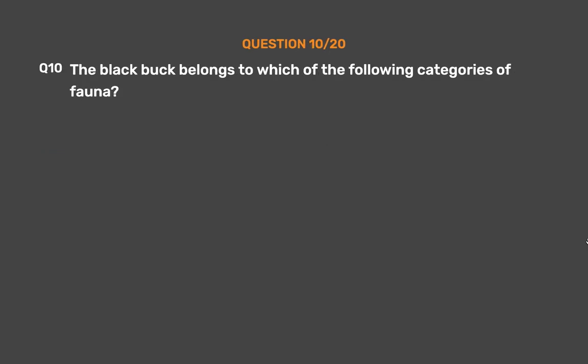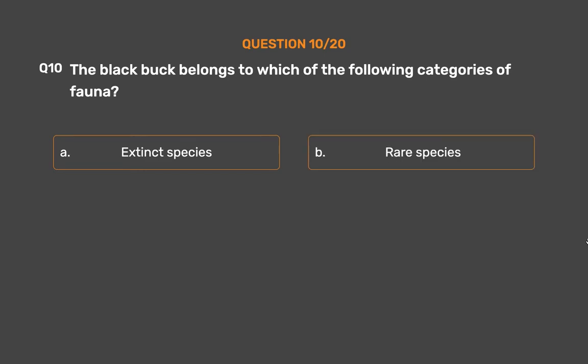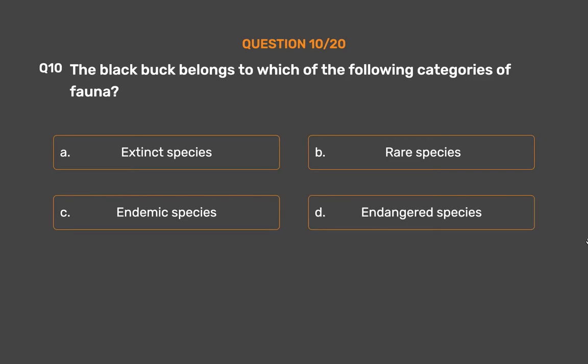Question number 10. The black buck belongs to which of the following categories of fauna? Option A: Extinct species. Option B: Rare species. Option C: Endemic species. Option D: Endangered species.